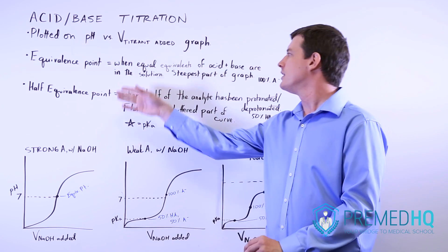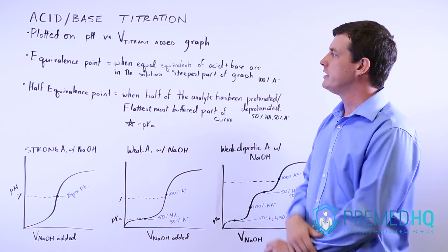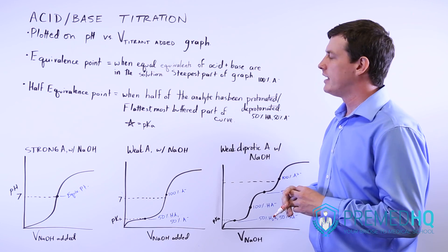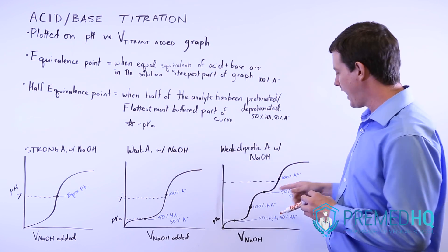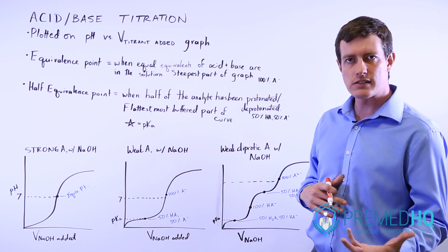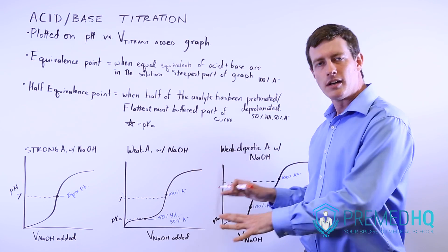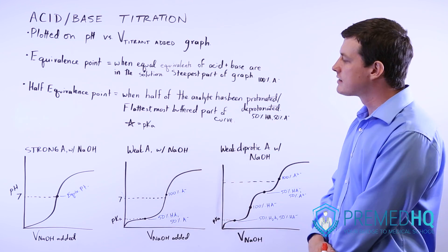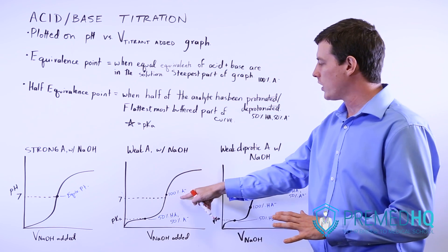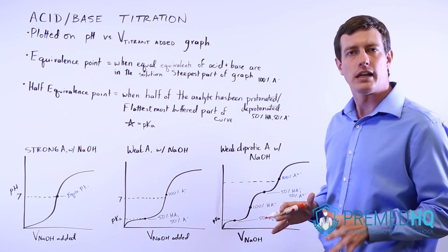The first important point is the equivalence point. The equivalence point happens when you've added an equal number of acid and base equivalents. That means that, no matter what acid you're working with, you will have added enough base to deprotonate every single acid molecule that was in your solution. This is the steepest part of the graph, and you can represent it as the point where 100% of the acid exists in its deprotonated form.